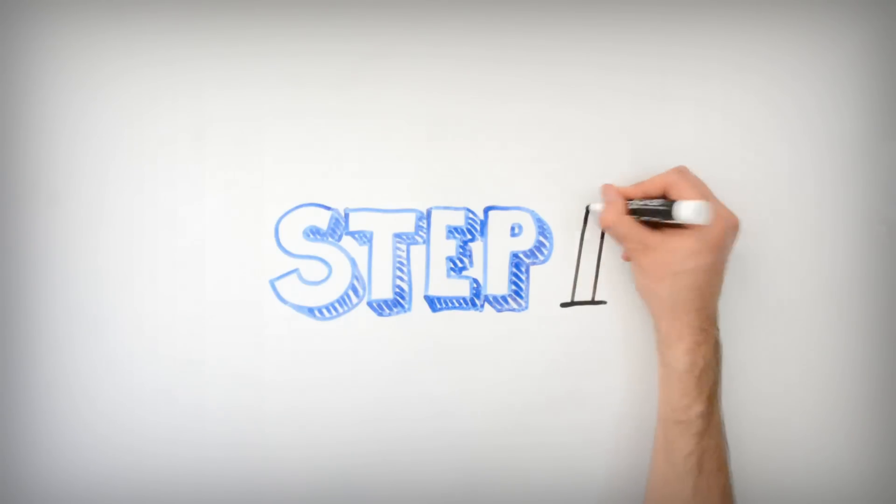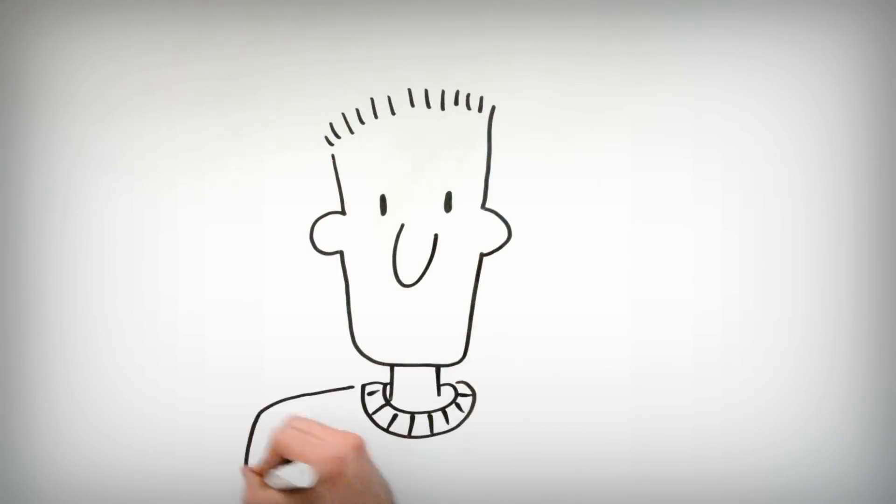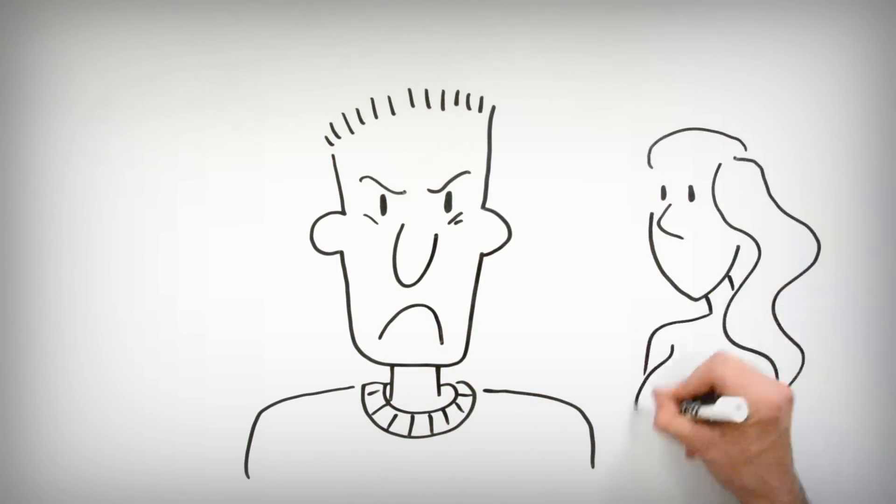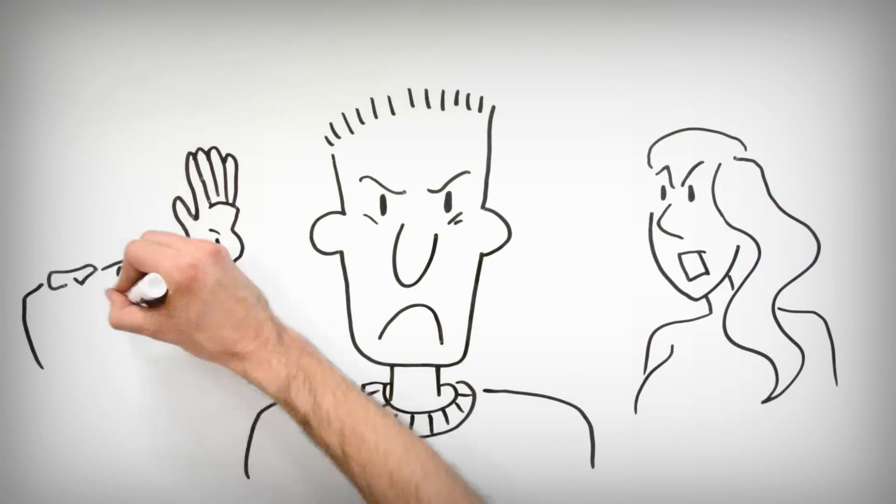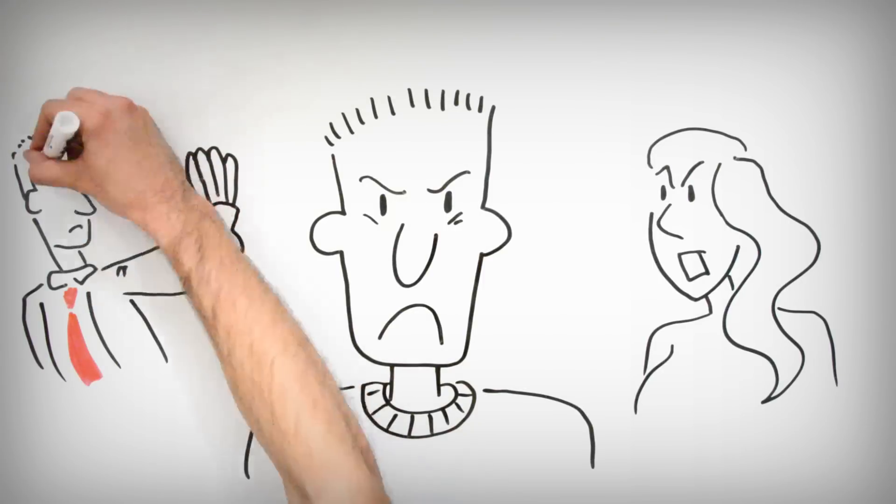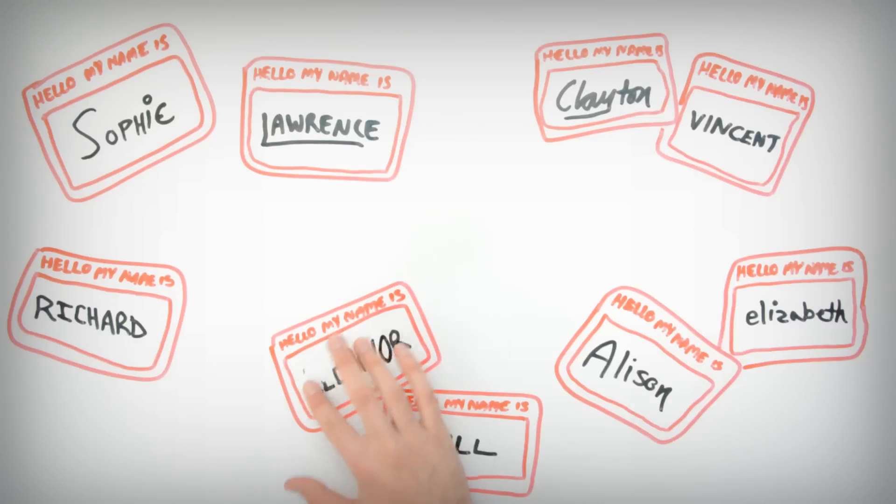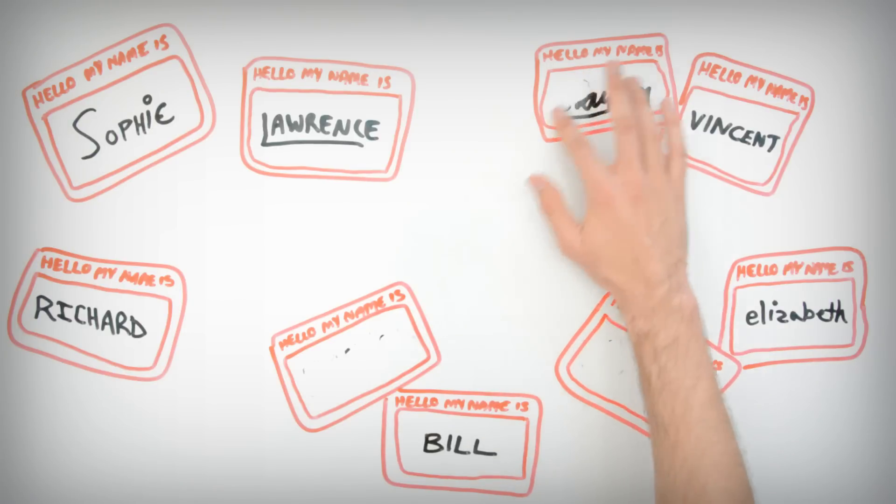Always walk around with a pissed off and unpleasant face. Don't ever smile. When people don't react well to you and your social interactions suffer, be confused as to why. Make sure to not make any effort to remember people's names. It's not like you can make them feel like you care if you do.